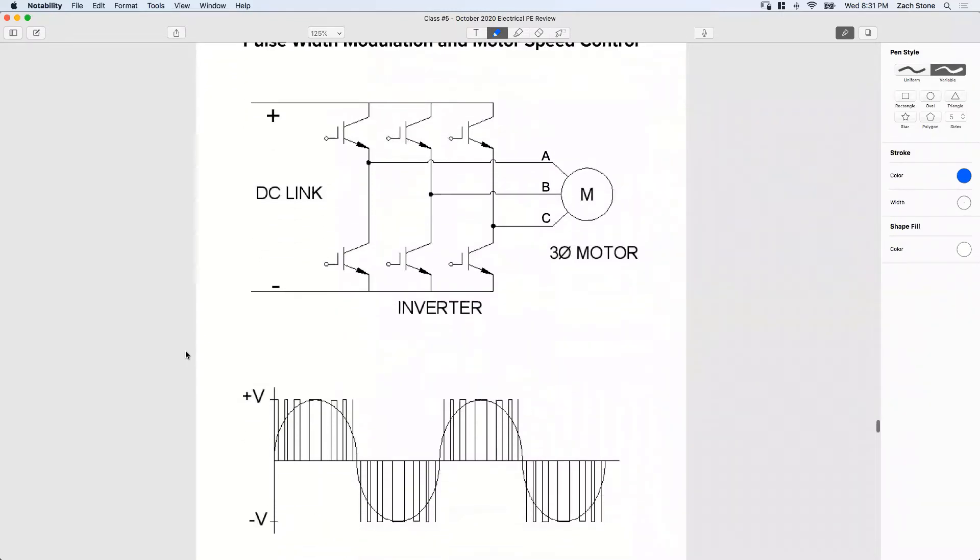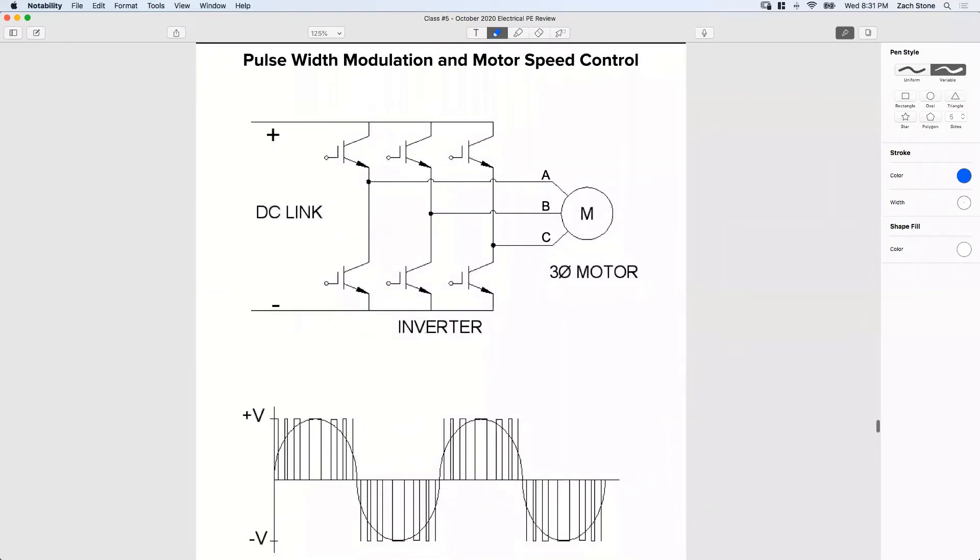So we have something that's called pulse width modulation, right? And motor speed control. What does modulation mean? Think of it as maybe to change. So these are all pulsed signals. See these rectangles? They're either on-off is what it means by pulse. And width modulation means that the widths are varied.